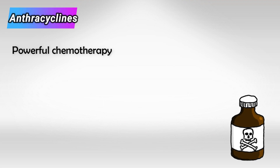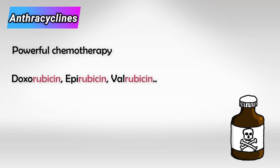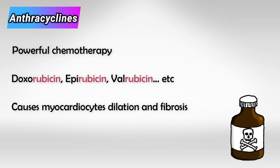Next are the anthracyclines, and these are the medications ending with the suffix -rubicin, like Doxorubicin and Epirubicin. These cause dilation of the cardiocytes with fibrosis, and of course these changes are irreversible.